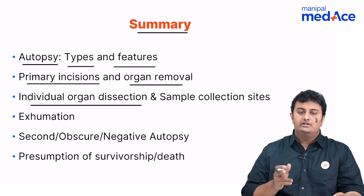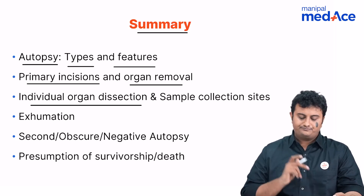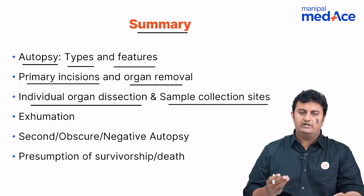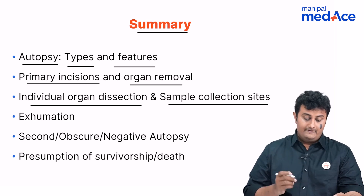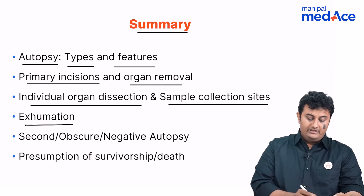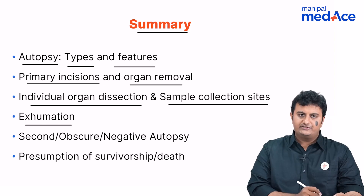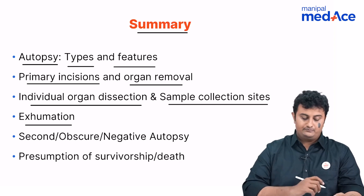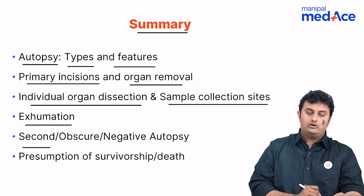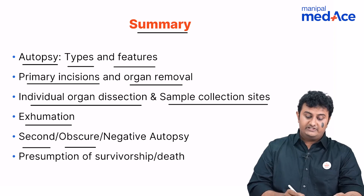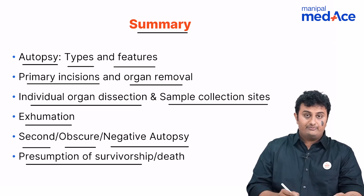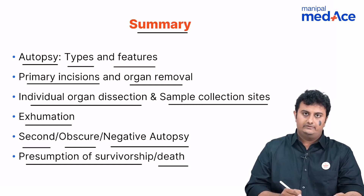In fetuses, acetic acid is added. We discussed sample collection sites — the best sites for blood, urine, CSF, and DNA. Then we talked about exhumation: what it is, whose permission is required, who provides an inquest, and why it is done. We also covered second autopsy, obscure autopsy, negative autopsy, and lastly, presumption of survivorship and presumption of death. This brings us to the end of this session.